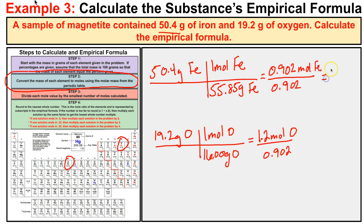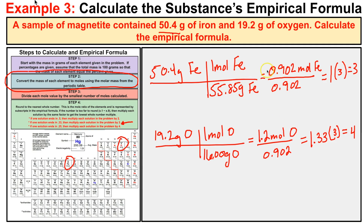Dividing gives us 1 for iron and 1.33 for oxygen. Since the empirical formula subscripts must be whole numbers, and this result ends in 0.33, we multiply each subscript by 3. That gives us 3 for iron and 4 for oxygen, so the empirical formula for magnetite is Fe3O4.